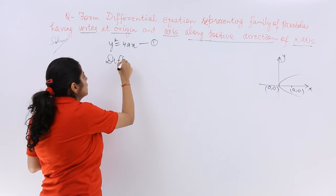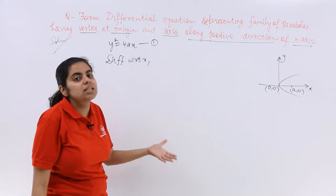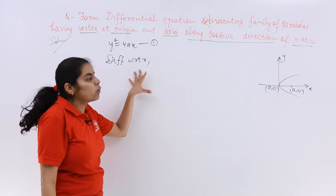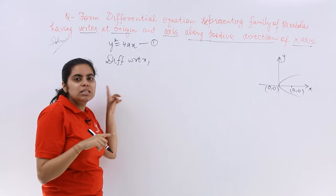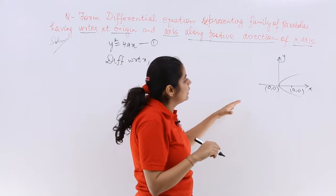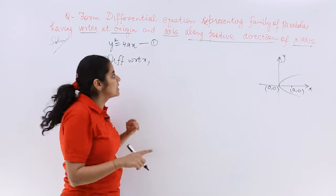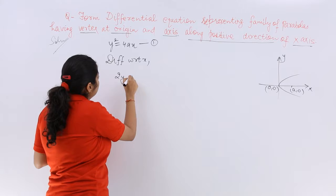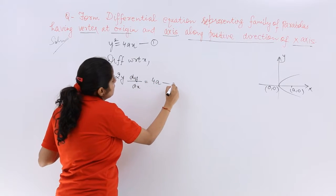Now differentiating with respect to x. Why so? Because we need to understand that we are supposed to find the differential equation. And why only y² = 4ax? Because it's specifically mentioned that the axis is along the positive direction of x-axis. Now differentiating we get 2y dy/dx = 4a. This is equation number 2.